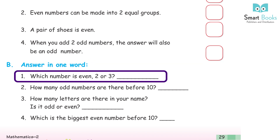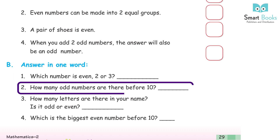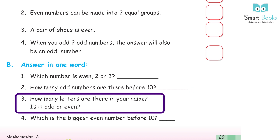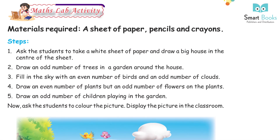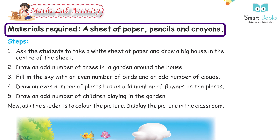Mental math section B: answer in one word. One — which number is even, two or three? Answer: two. Two — how many odd numbers are there before ten? Answer: five. Three — how many letters are there in your name, is it odd or even? Answer: do it yourself. Four — which is the biggest even number before ten? Answer: eight.